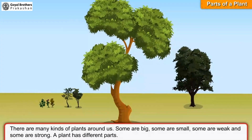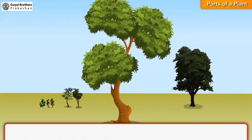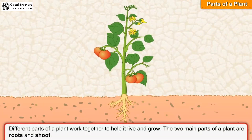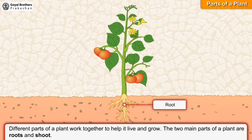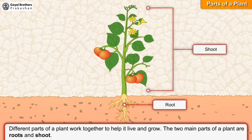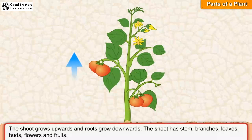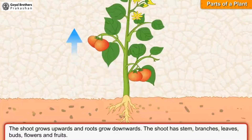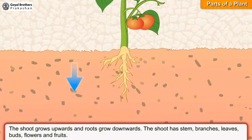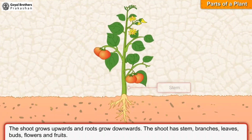A plant has different parts. Different parts of a plant work together to help it live and grow. The two main parts of a plant are roots and shoot. The shoot grows upwards and roots grow downwards. The shoot has stem,